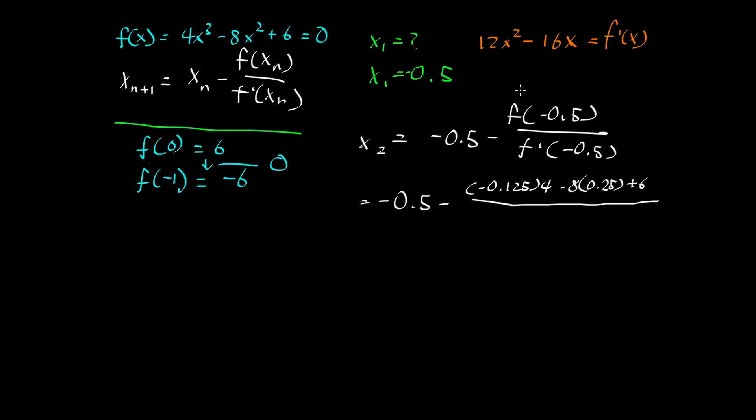The power rule gives us 12x² - 16x. That's equal to f'(x). So let's go back here. f(-0.5): -0.5 times -0.5 times -0.5, that's going to be -0.125 times 4, that's our first term minus our second term 8 times 0.25, -0.5 squared is 0.25. This is going to be all plus 6. We're going to divide all of this by our f'.